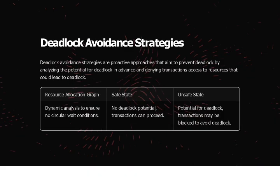Deadlock avoidance strategies are a proactive approach that aims to prevent deadlock by analyzing the potential for deadlock in advance and denying transactions resources that could lead to deadlock. Resource allocation uses dynamic analysis to ensure no circular wait condition exists. In a safe state, no deadlock potential exists and transactions can proceed. In an unsafe state, there is potential for deadlock and transactions may be blocked to avoid it.